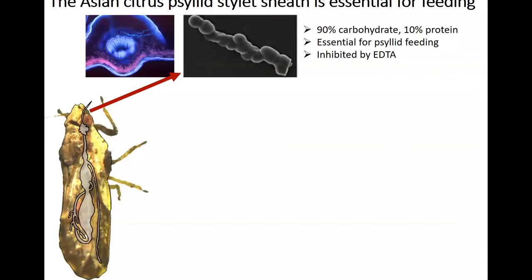We know that this sheath is made out of 90% carbohydrates and 10% proteins, and it is essential for psyllid feeding. So if this structure cannot polymerize, the psyllid cannot penetrate the citrus tissue. We know that its polymerization is inhibited by EDTA, which is a molecule that binds to metal ions. I wanted to know what proteins were present in the structure, and so I used proteomics to determine that.